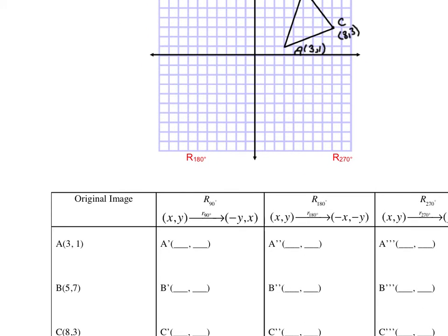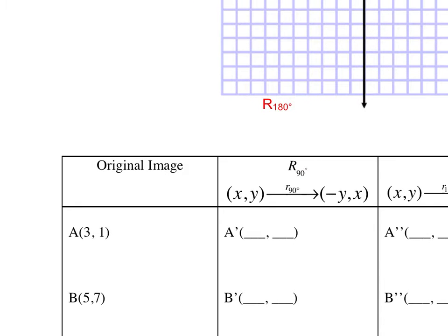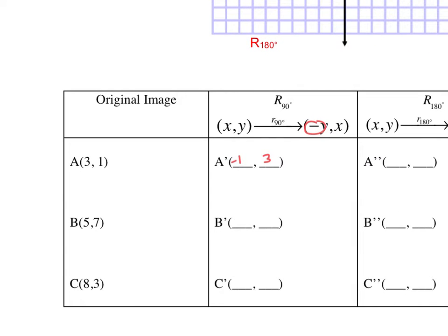When I rotate it 90 degrees I start with my ordered pair (x,y). I switch them so if I start with the point (3,1) I'm now going to do (1,3) because I'm switching them. And now I make my first value opposite of what it actually is. So instead of it being a positive 1 it's a negative 1. Now when I rotate the point (5,7) I still switch them so I'm going to do (7,5) but again I make my first value opposite of what it actually is. So this becomes a negative 7.